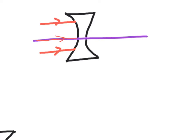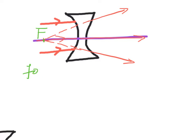When three parallel light rays travel towards the concave lens, after refraction, the light rays will diverge. By producing the refracted light backward, they will meet at a point called the focus. For a lens, there are two foci equal distance from the lens. The center of the lens is called the optic center, and the distance between the focus and the center of the lens is called the focal length.